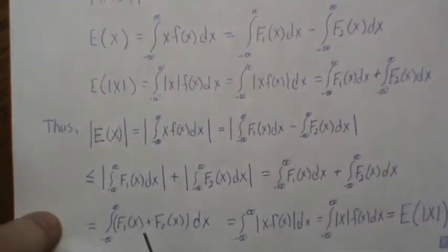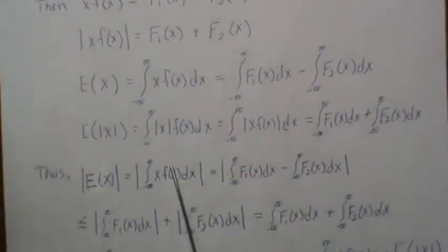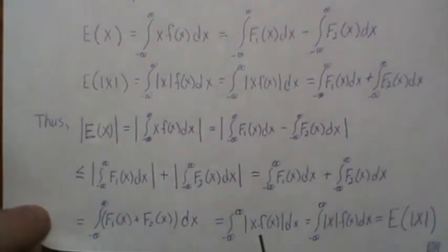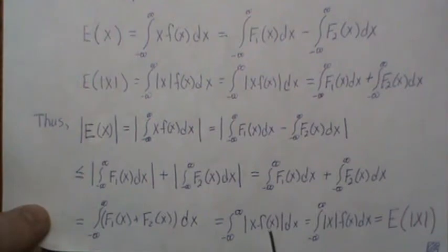This here we determined was the absolute value of this. But since f of x is always positive, you can take the absolute value of the product of absolute values, but that's always positive so we can take them away and we get this. But this is the expected value of the absolute value of X.